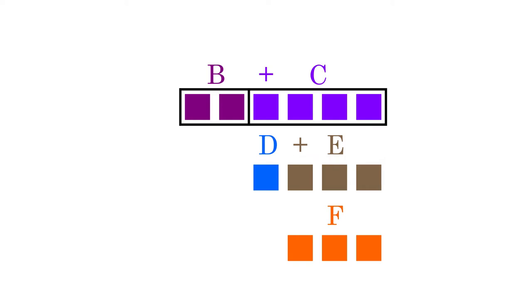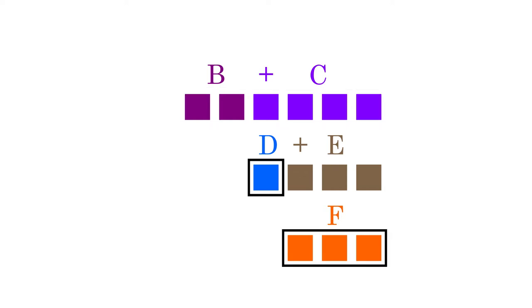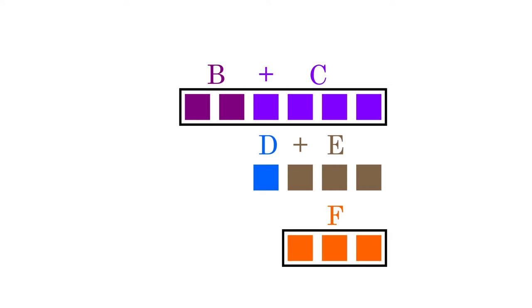b was one third of b plus c, so d is a sixth of b plus c. d was a third of f, so b plus c is double f. That's rather a roundabout way of getting to the conclusion. The second version of the proof is much more straightforward.